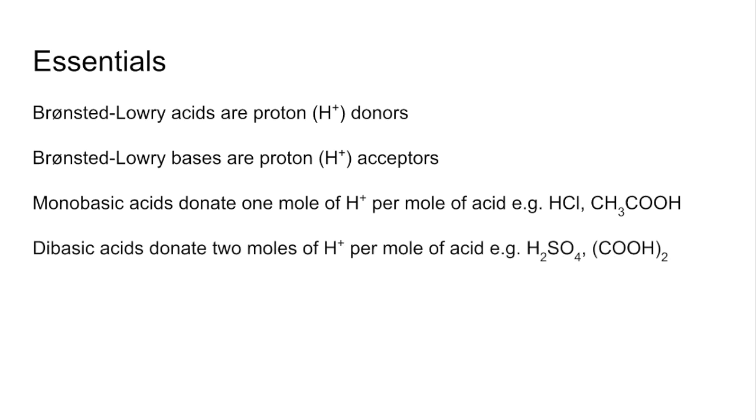Dibasic acids donate two moles of H⁺ per mole of acid. We've got sulfuric acid and ethanoic acid. And finally, tribasic acids can donate three moles of H⁺ per mole of acid. Phosphoric acid is the example I've got there.